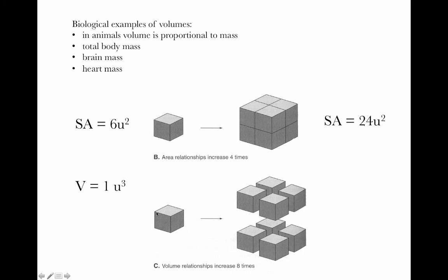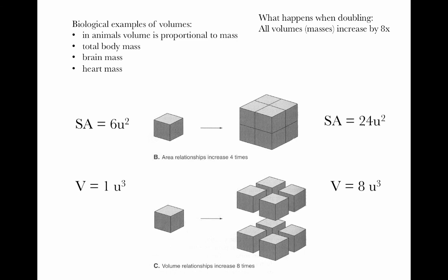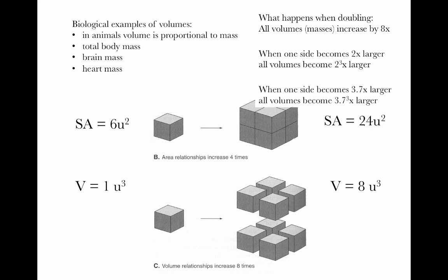When we double the cube, we have 8 of these little cubes if we blow apart the larger cube, each with a volume of 1u cubed, giving a total volume of 8u cubed. So when we doubled a side, all volumes increased by 8 times. When one side becomes 2 times larger, all volumes become 2 to the 3rd times larger. If we increased a side by 3.7 times, all volumes increase by 3.7 to the 3rd power times. In general, volumes scale in proportion to length cubed.